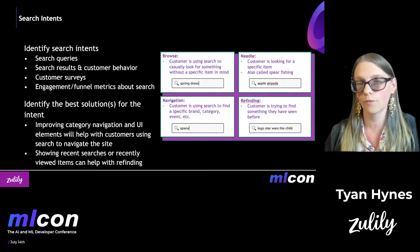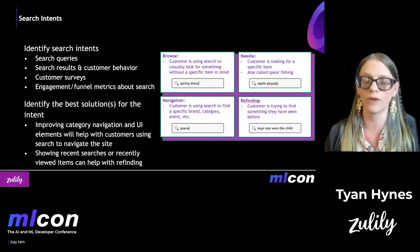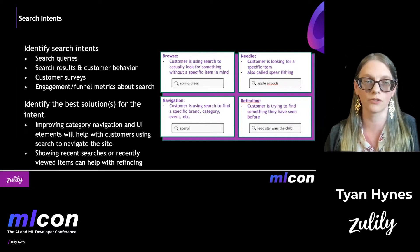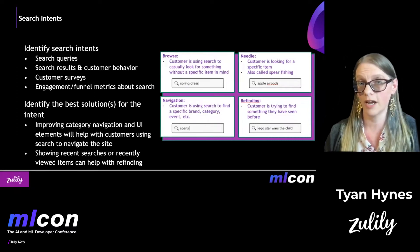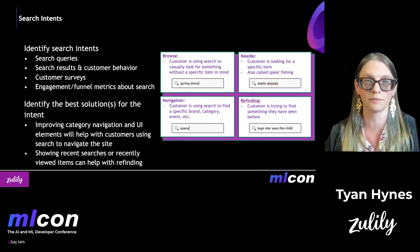For example, if we're trying to improve navigation, that might actually be more of a UI issue rather than something you would address through search relevance. If you're trying to help people with refinding, showing recent searches or recently viewed items can also help with that.